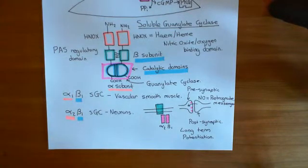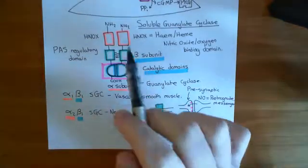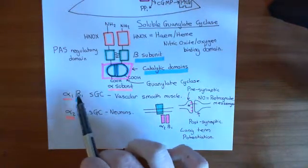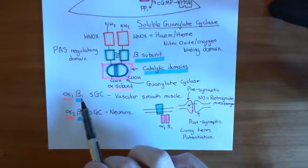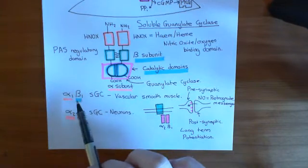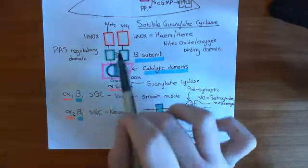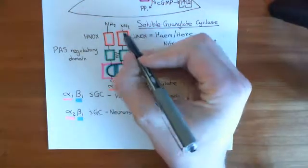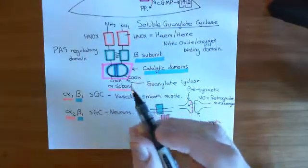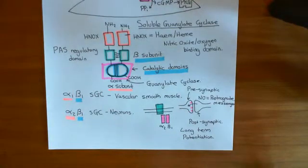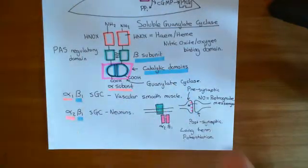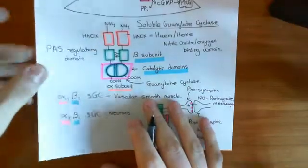Nitric oxide is going to interact with a heme-prosthetic group, which is stuck off this beta-1 subunit. Both examples of soluble guanylate cyclases use this same beta-1 subunit. The beta-1 subunit has a histidine residue at position 105, which is in the HNOX portion of the protein, capable of binding to a heme-prosthetic group. We'll look at the heme group structure, how it attaches to histidines, and then how nitric oxide can activate the enzyme.